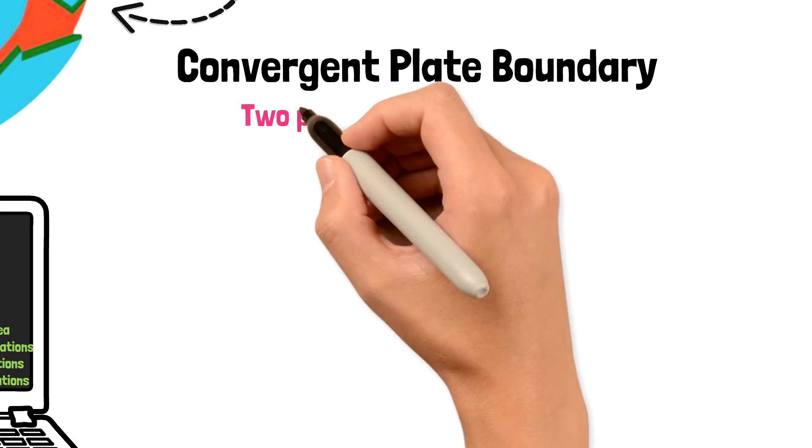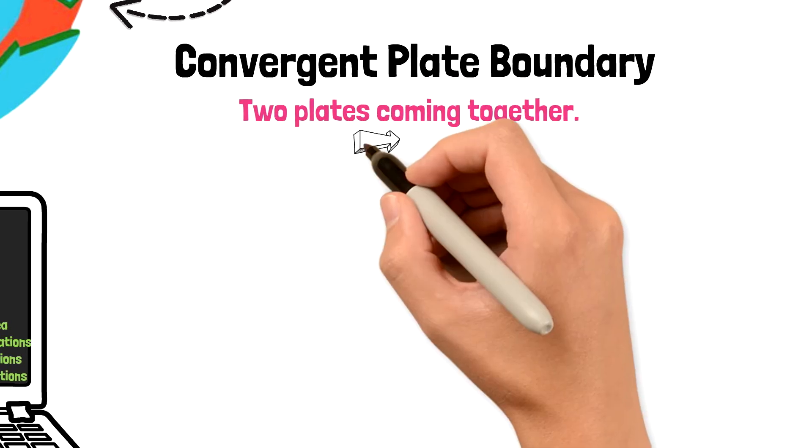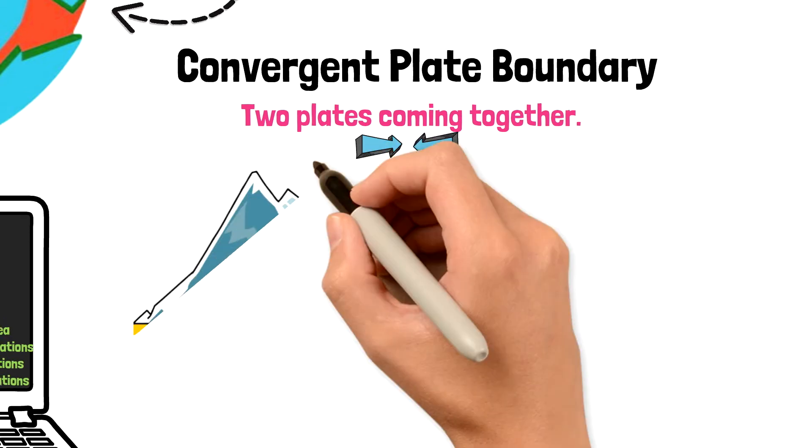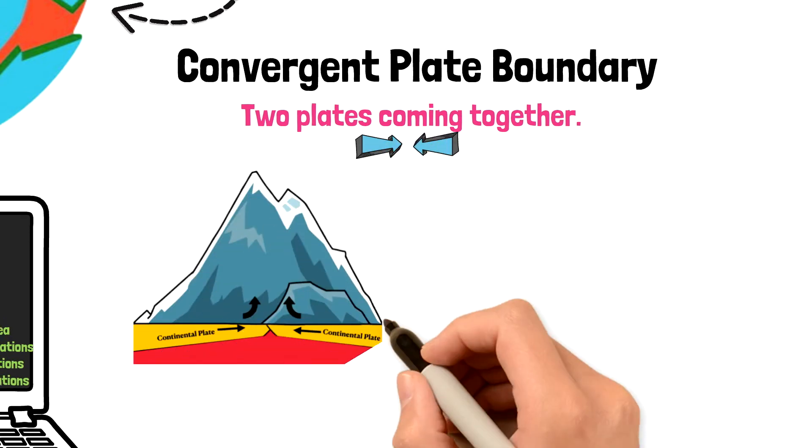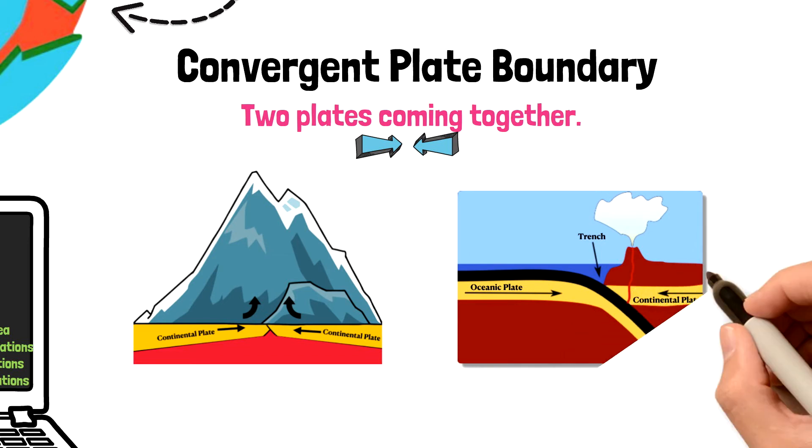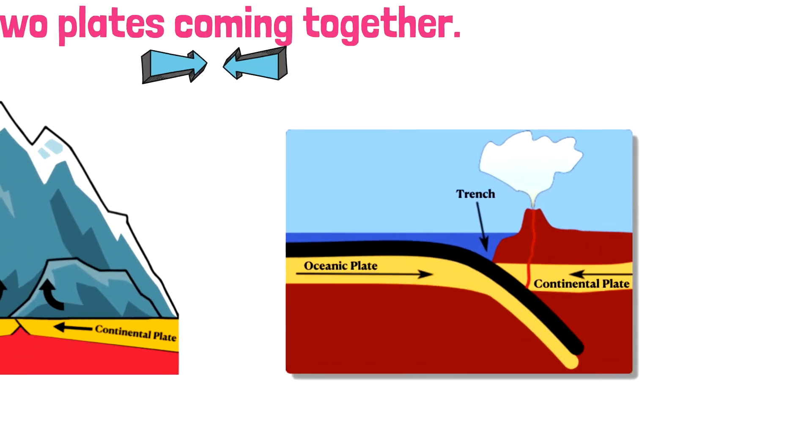Convergent plate boundaries are where two plates come together. As these plates come together, they can do a number of things. They can smash into each other, in which case both plates will be lifted up, creating a mountain. They can also push into each other, where one plate can go underneath the other, creating an ocean trench.